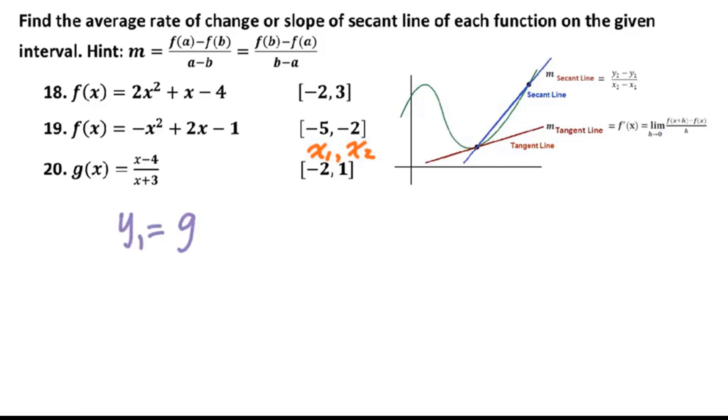That equals g of x1, that means g of negative 2. So we plug negative 2 into this g function. We get negative 2 minus 4 over negative 2 plus 3. We got negative 6 over 1. Therefore, we got negative 2, negative 6. That is your x1, y1.